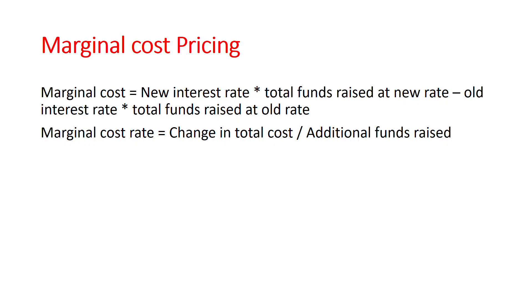So we can calculate the maximum profit and we can calculate the marginal cost pricing. The methods are: first, cost plus profit margin; second, weighted average; and third, new fund raise. In different volumes of deposit, the volume is very profitable. So that is the marginal cost pricing.